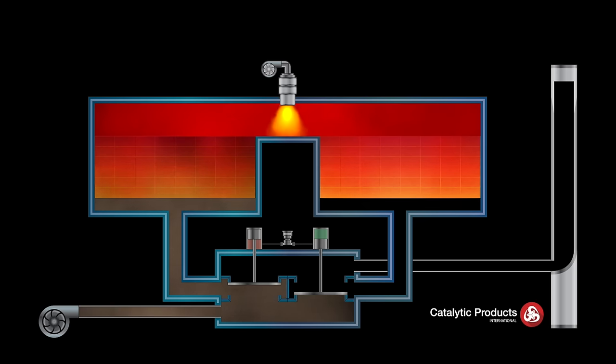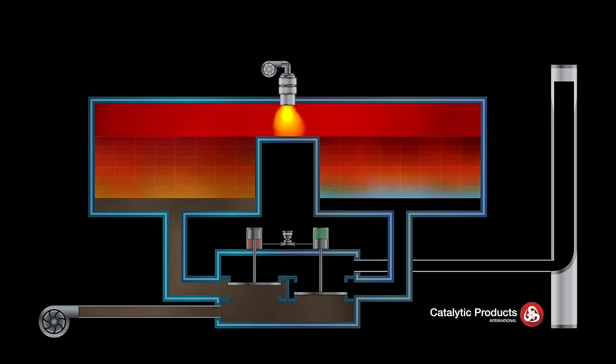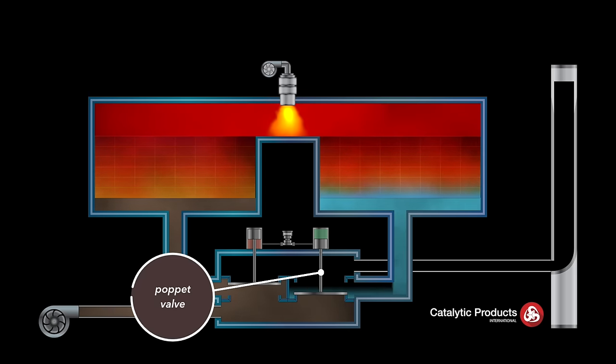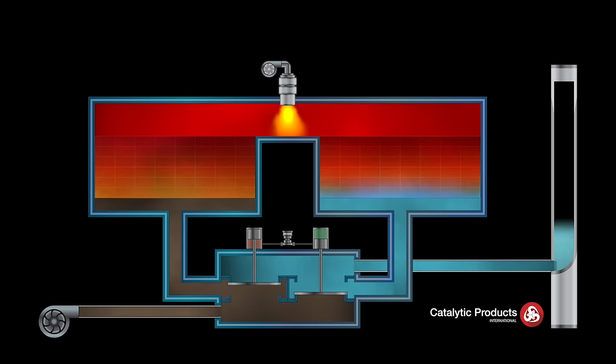The clean hot air stream is then forced down into the second heat exchanger column where it is cooled as it passes through the ceramic media, which absorbs the heat before exiting through the second poppet valve. The cleaned cool air is then directed to the exhaust stack and released into the atmosphere.